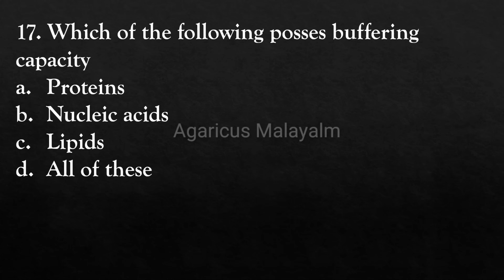Seventeenth question (previous year question): Which of the following processes buffering capacity? Answer options: Option A - proteins, Option B - nucleic acid, Option C - lipids, Option D - all of these. Correct answer: Option D - all of these.